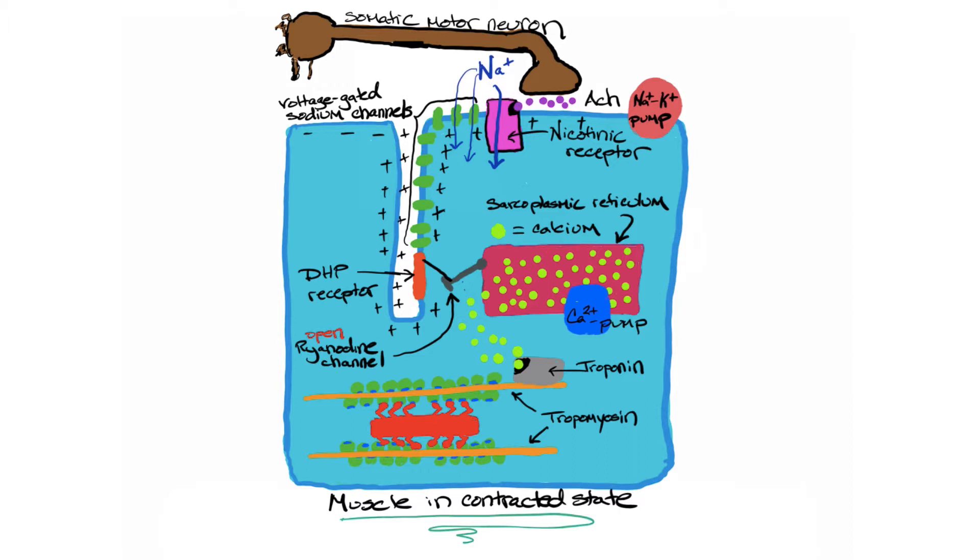This is showing the same concepts where we have a somatic motor neuron releasing its signaling molecule acetylcholine, binding to the nicotinic channel, ultimately causing the release of calcium from the sarcoplasmic reticulum, binding to troponin, one of the regulatory proteins.